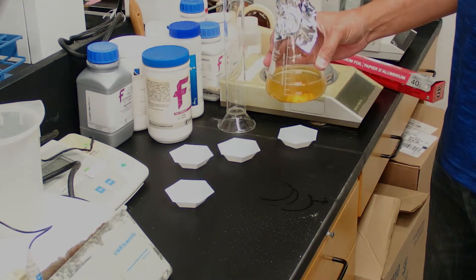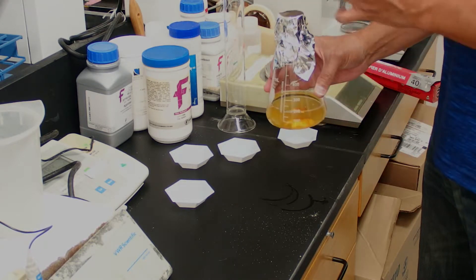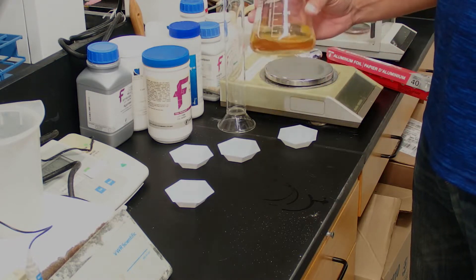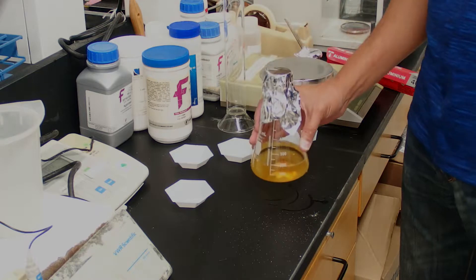We'll cover it in a 500 milliliter Erlenmeyer flask so that it doesn't boil out of the flask in the autoclaving process. Now we'll take this down to autoclave and sterilize it.